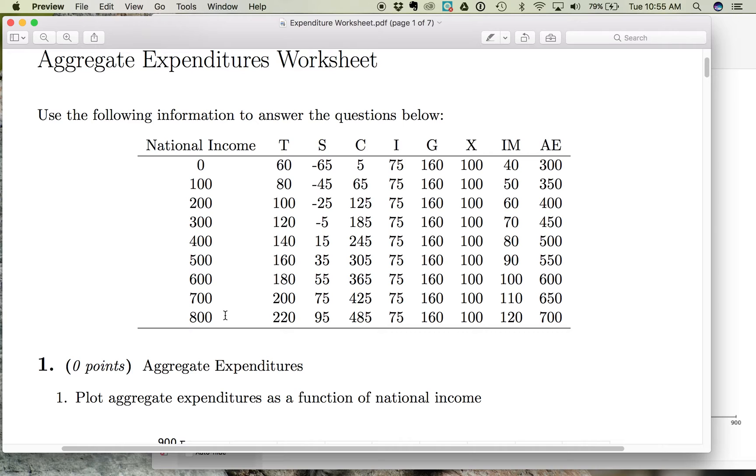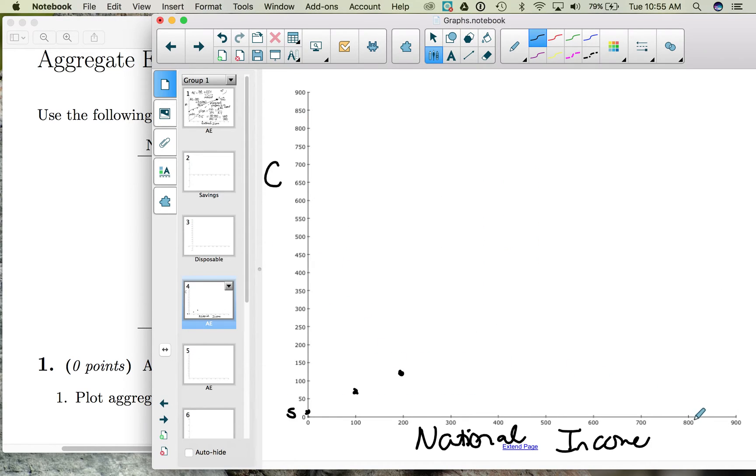Ultimately, we have national income of 800 and consumption spending of 485. So connect those dots there.